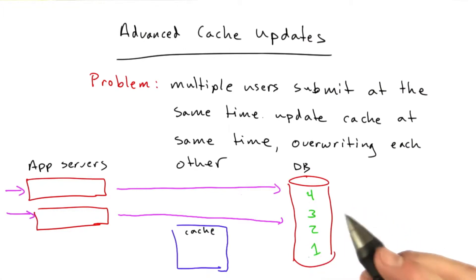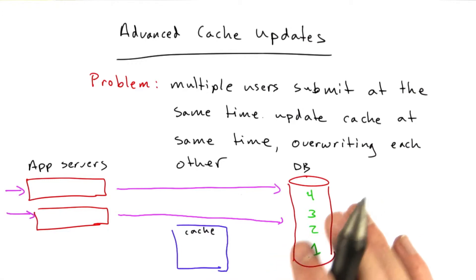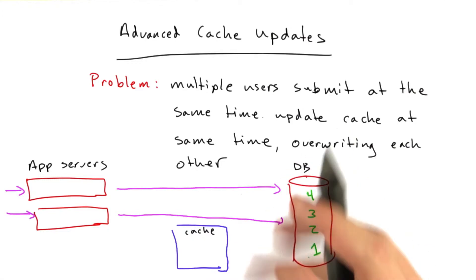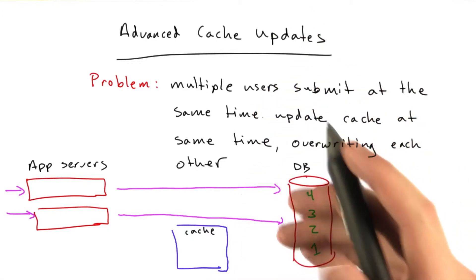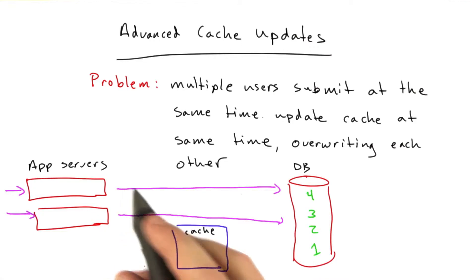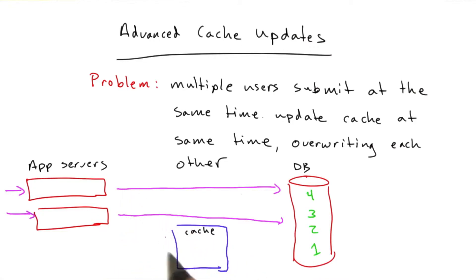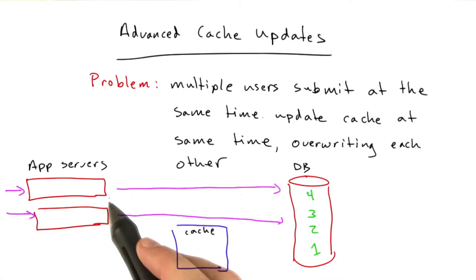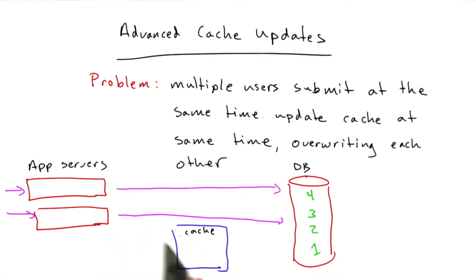The database stays in sync because databases enforce these constraints. You can insert as many things as you want at the same time, and the database will order it all for you. But here's the problem. Let's start with version 1 of this problem, which is each of these app servers is manipulating the cache directly.